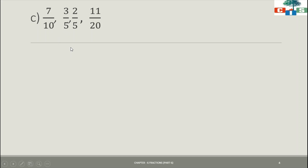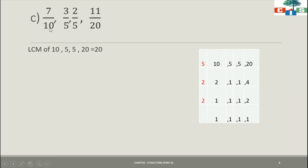We will find the LCM of the denominators — that is 10, 5, 5, and 20. The LCM of 10, 5, 5, and 20 is 20. I have used the short division method for finding the LCM — you can use any other method also. So the LCM is 20. Now we have to convert each fraction to its equivalent fraction where the denominator will be equal to the LCM.